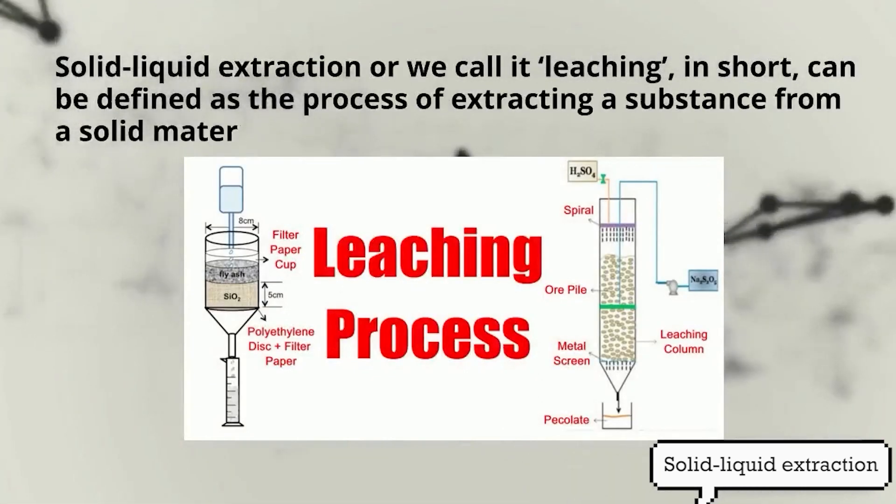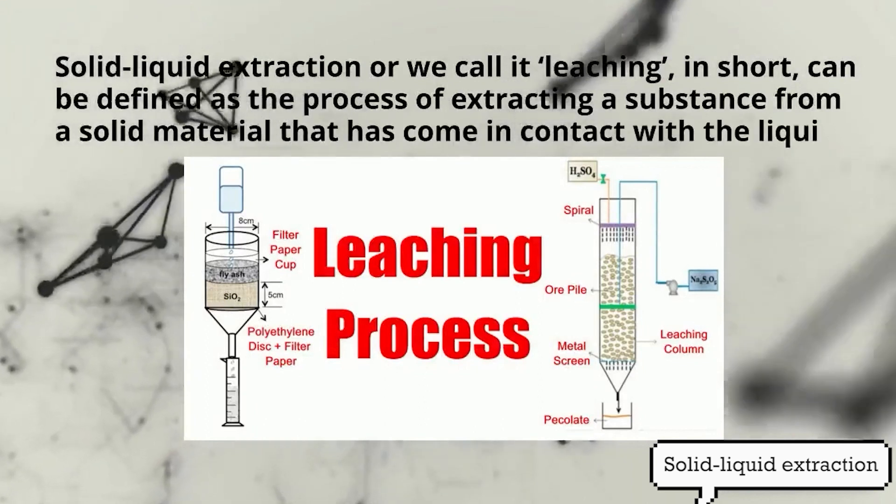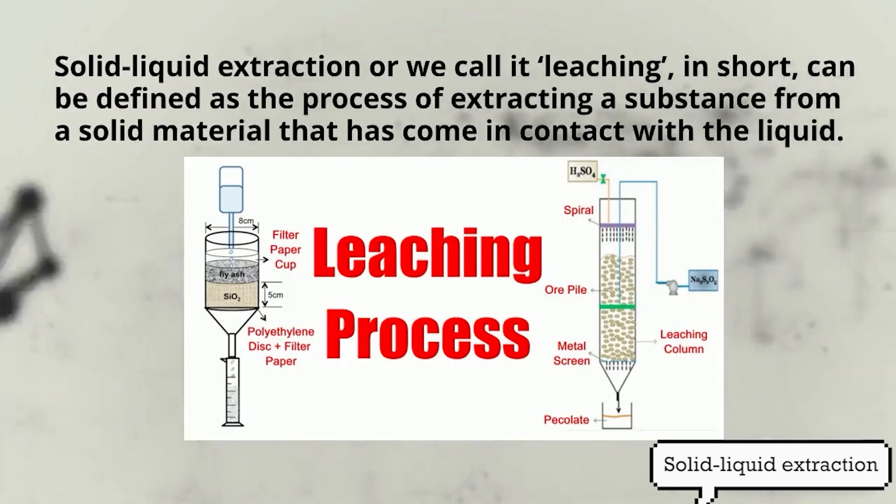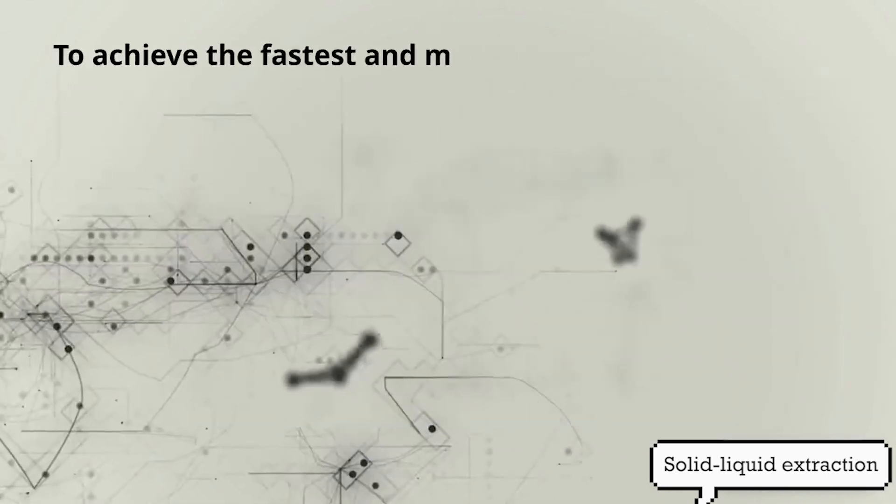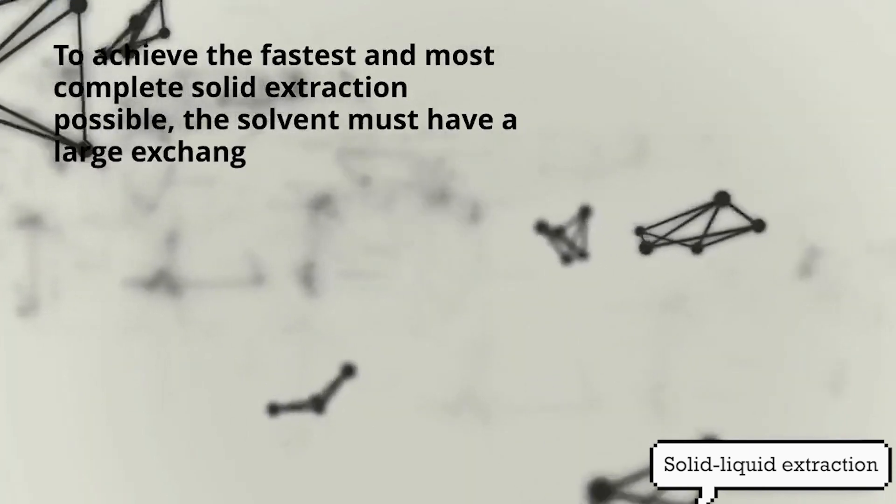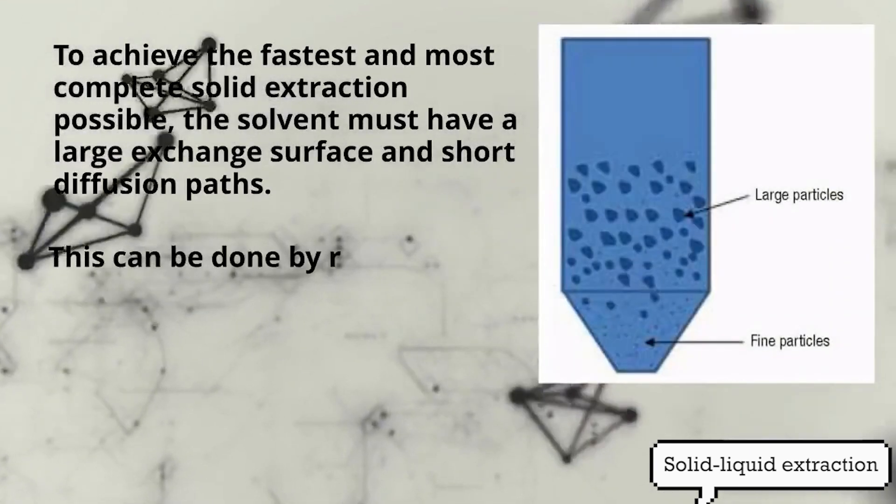in short can be defined as the process of extracting a substance from a solid material that has come into contact with the liquid. To achieve the fastest and most complete solid extraction possible, the solvent must have a large exchange surface and short diffusion path.